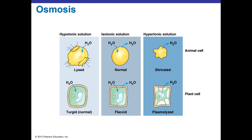Osmosis is also important in all cells — animal and plant cells alike. Animal cells do not have a cell wall, making them very susceptible to hypo- and hypertonic environments. In a hypotonic solution, water rushes in and bursts the cell open. In an isotonic solution, the amount of water coming in equals the amount going out — the cell is happy. In a hypertonic solution with high salt or sugar, the cell is dehydrated and will shrivel and fold in on itself.